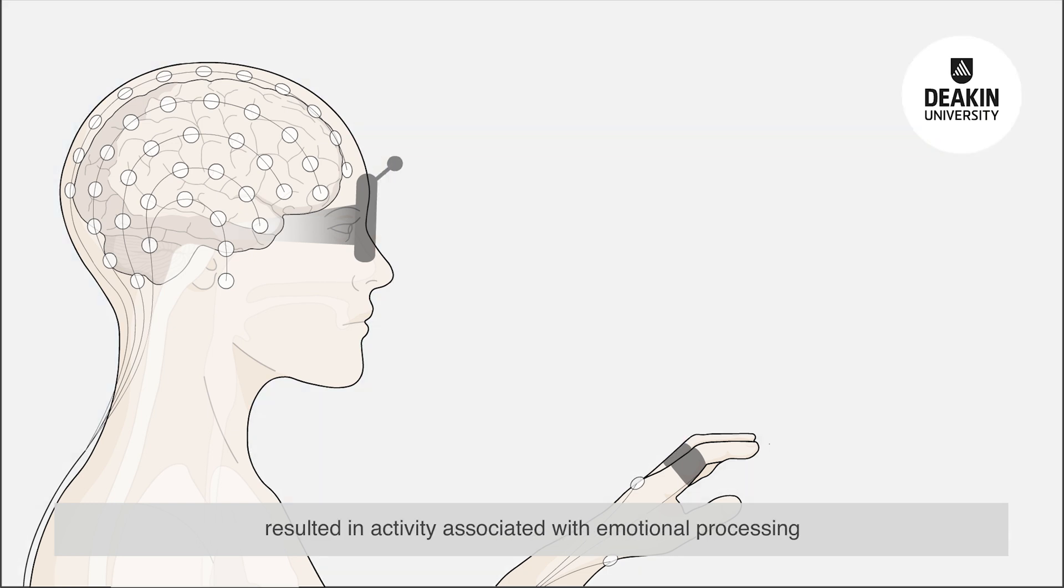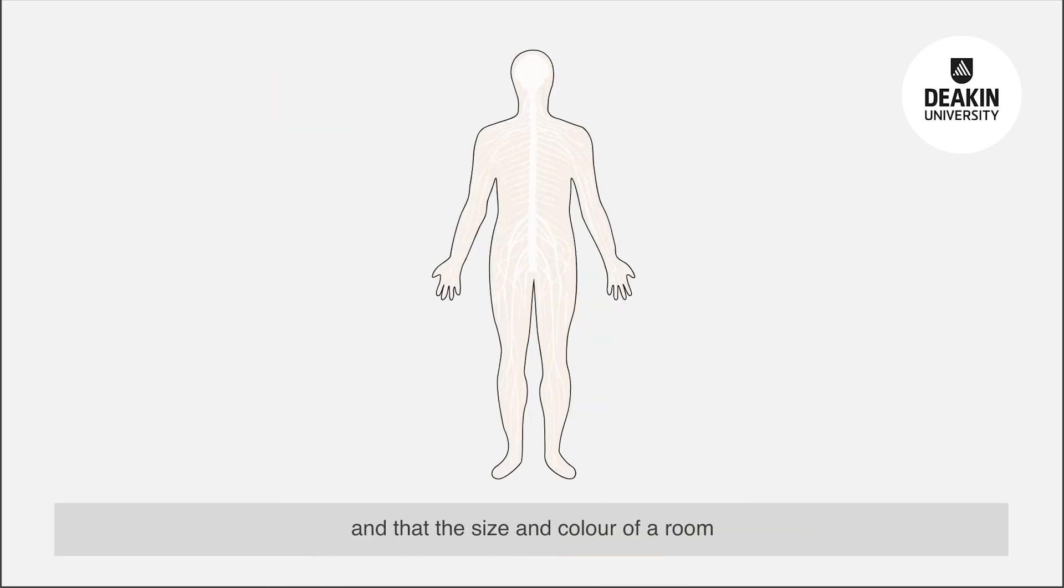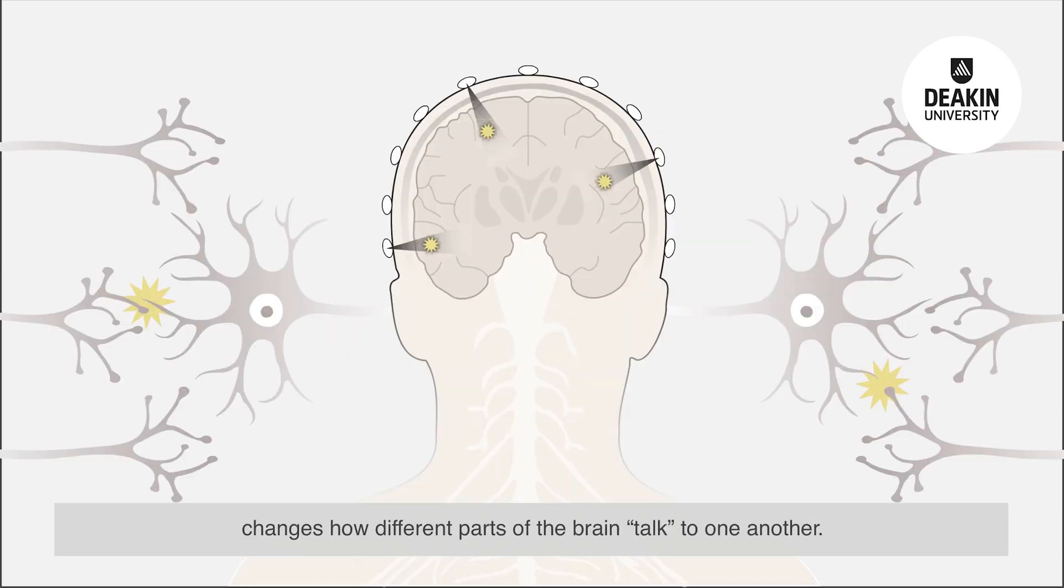A blue coloured room resulted in activity associated with emotional processing, and the size and colour of a room changes how different parts of the brain talk to one another.